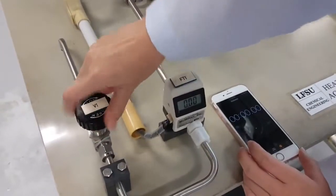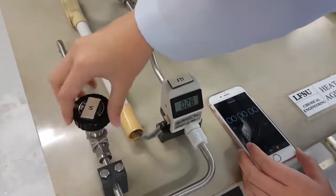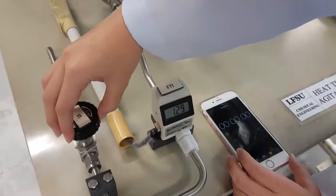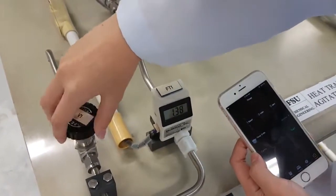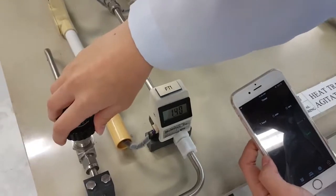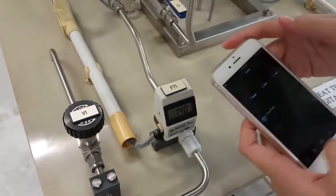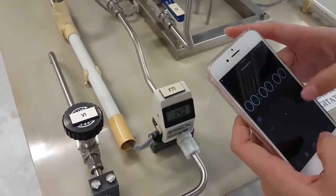And now, we have to open the flow rate to 1.4. And once it reaches 1.4, we start the timer.